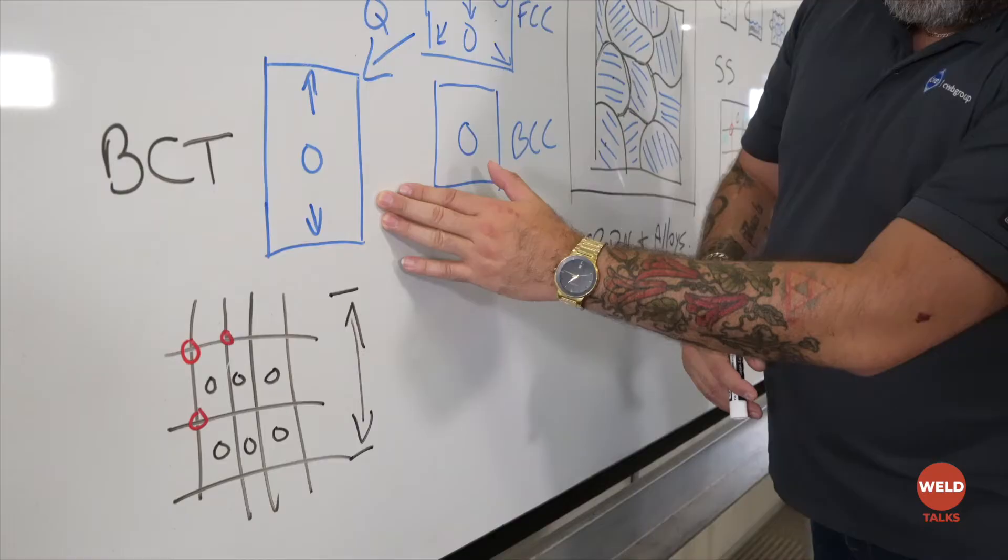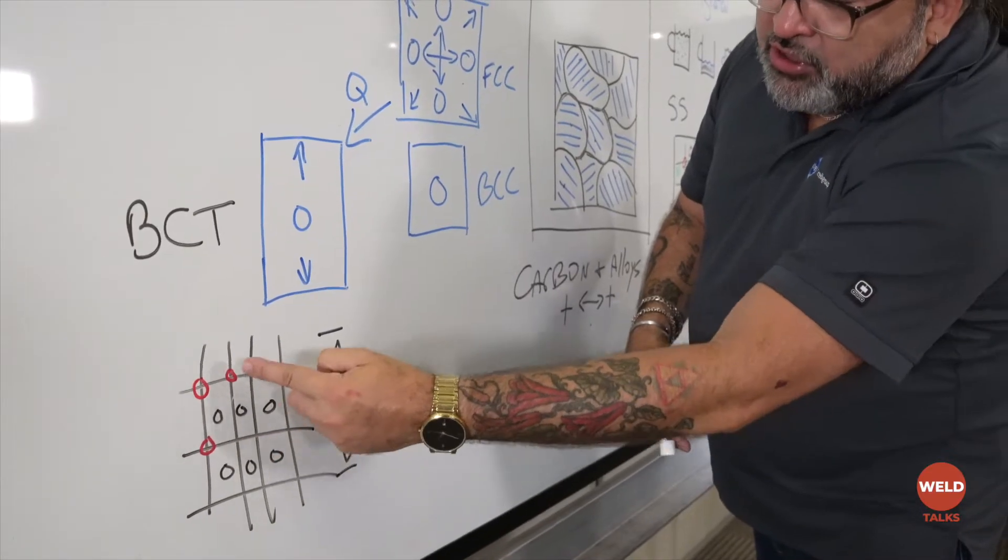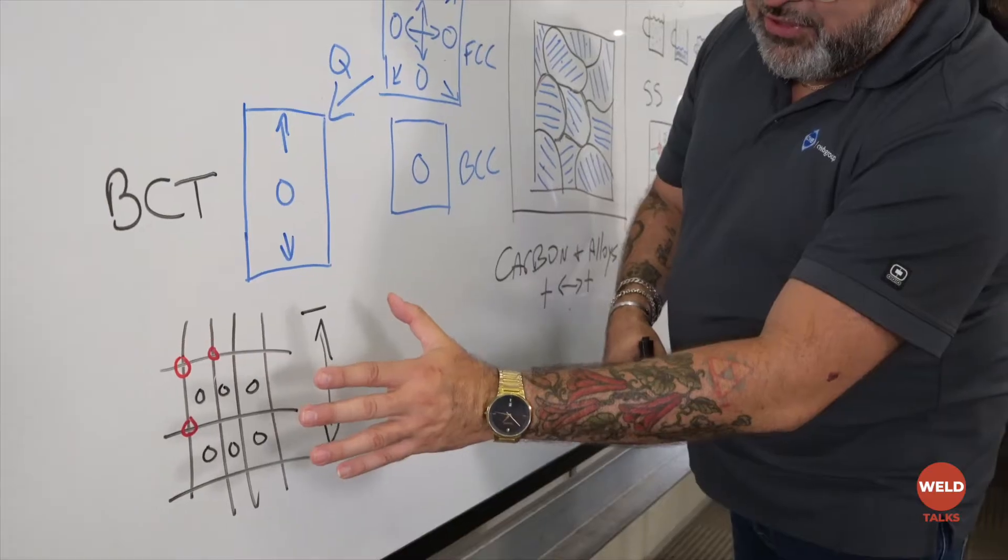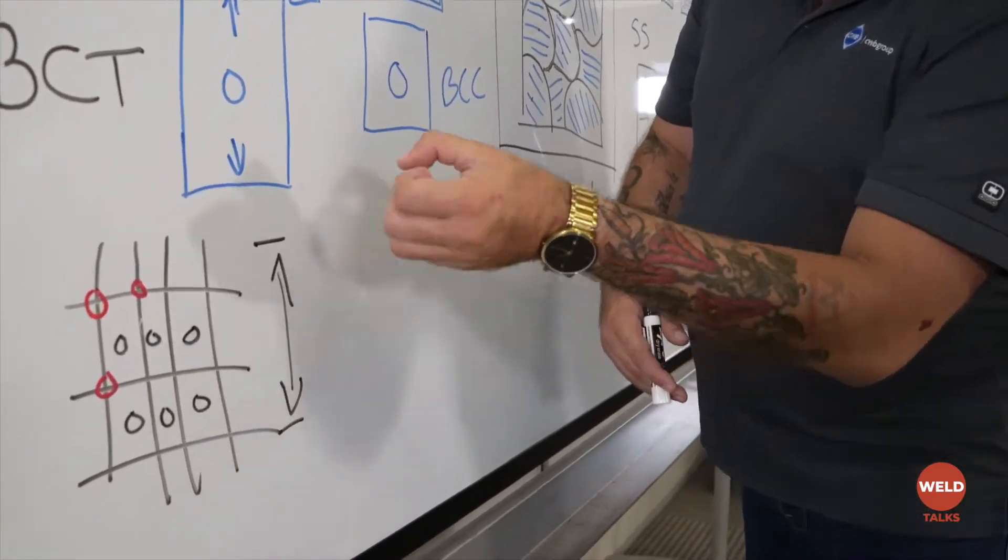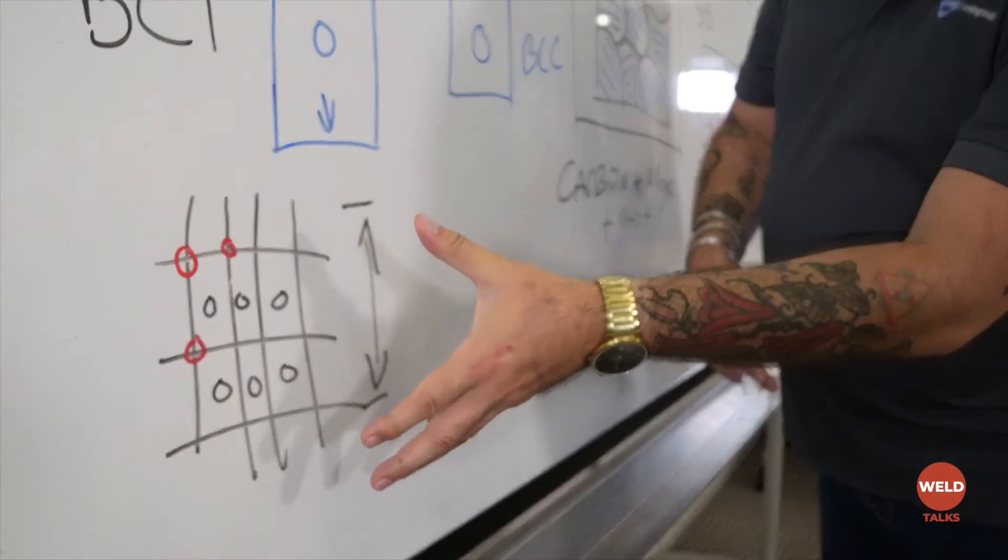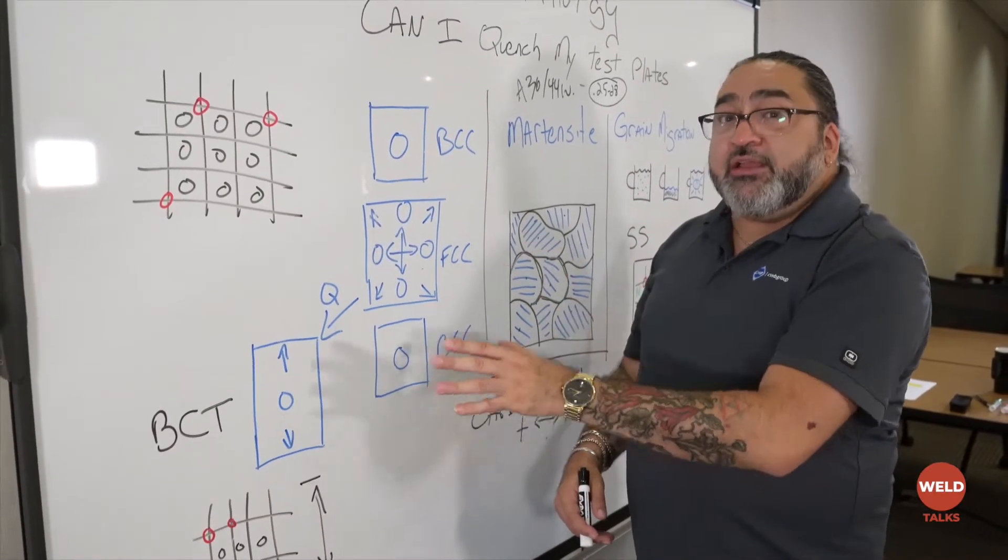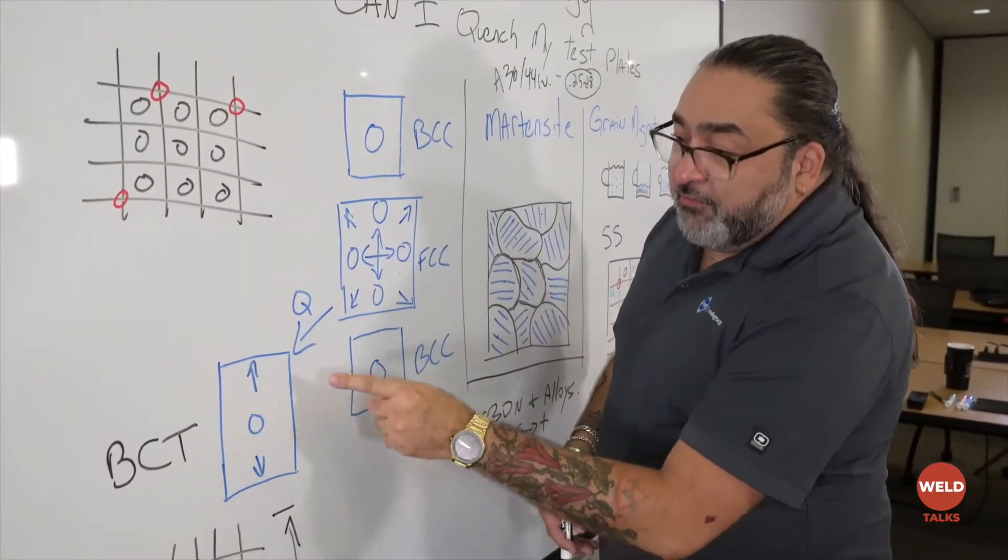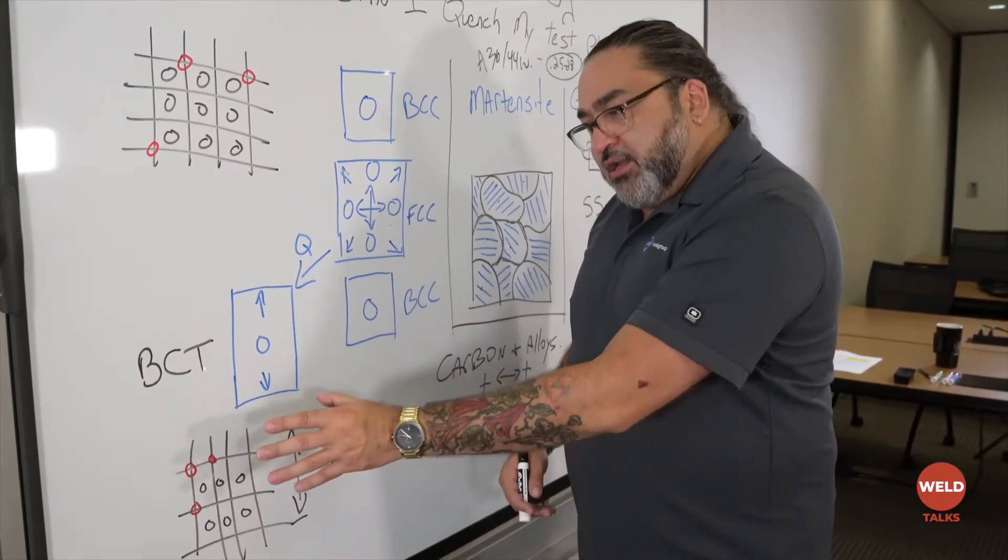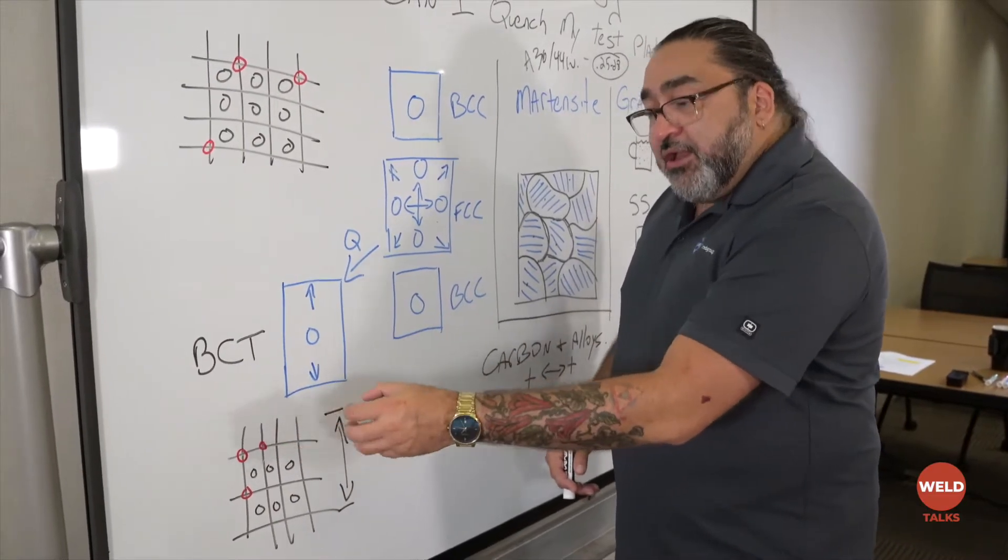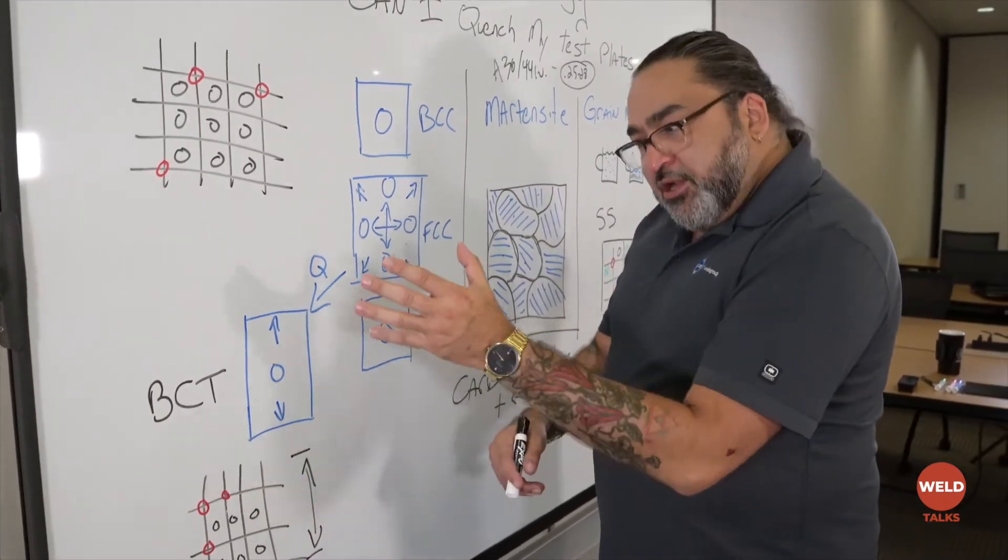My quench shape, my BCT, has affected my lattice. It made it longer in one direction than the other. Also you notice that my carbons kind of got together. On the top one where everything was happy, the carbons were spaced out evenly. Here, because the carbons want to hang out with carbons—like attracts like—they got stuck. I froze it. The lattice is long and my carbons are in one area. I got a double whammy: shape and carbons creating a hard spot there.